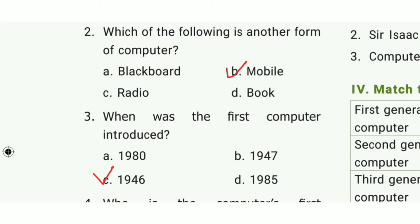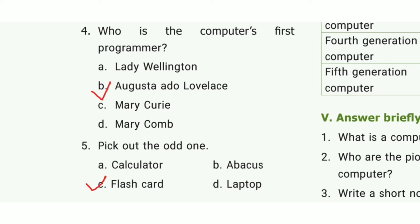Third one: When was the first computer introduced? The answer is option C, 1946. Fourth one: Who is the computer's first programmer? The answer is option B, Augusta Ada Lovelace. Fifth one: Pick out the old one. The answer is option C, Floppy Disk.